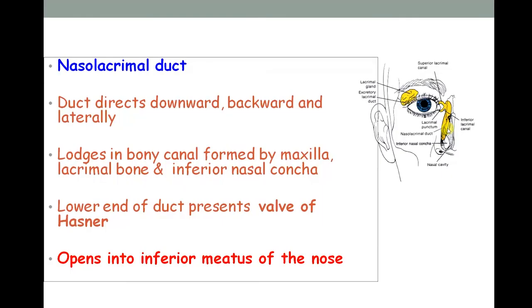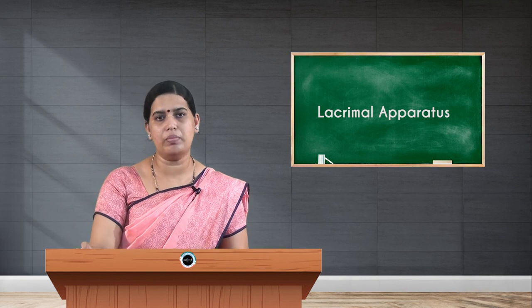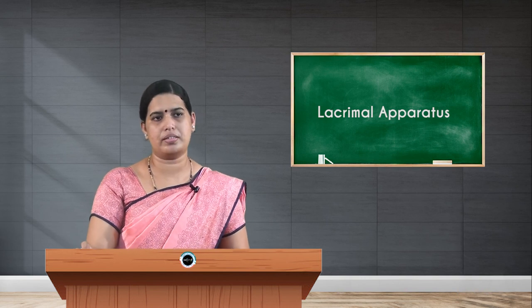To summarize, the five components constituting the lacrimal apparatus are: the lacrimal gland and its ducts, the conjunctival sac, lacrimal puncta, lacrimal canaliculi — superior and inferior — the lacrimal sac, and lastly the nasolacrimal duct. All these collectively form the lacrimal apparatus. Thank you.